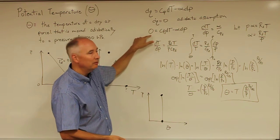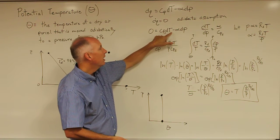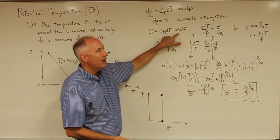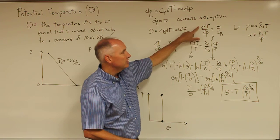So you end up with 0 is equal to C sub PD, because we're dry, so this is C sub PD DT minus alpha DP. And we can basically solve for DT over DP.